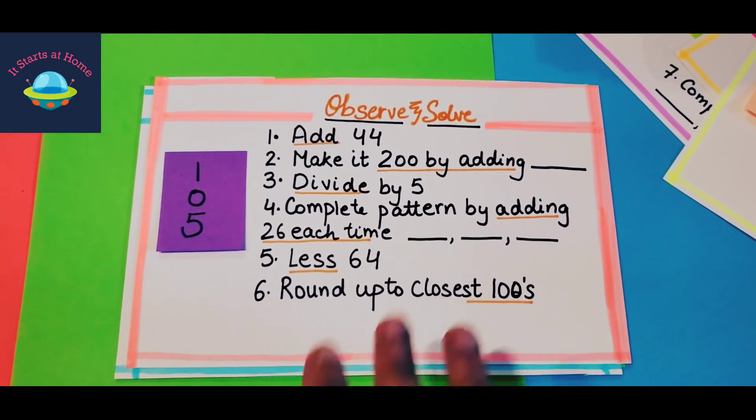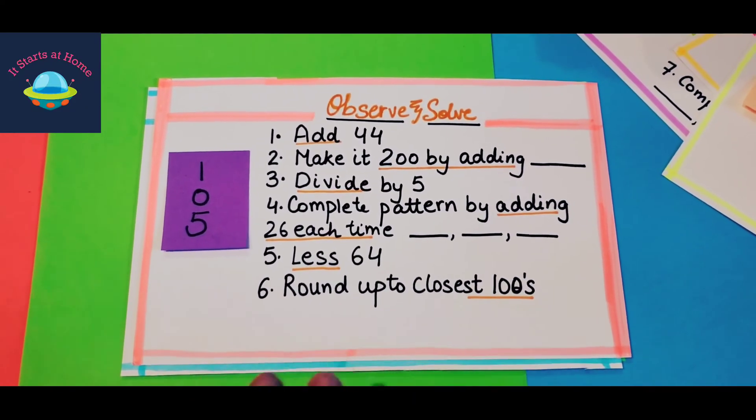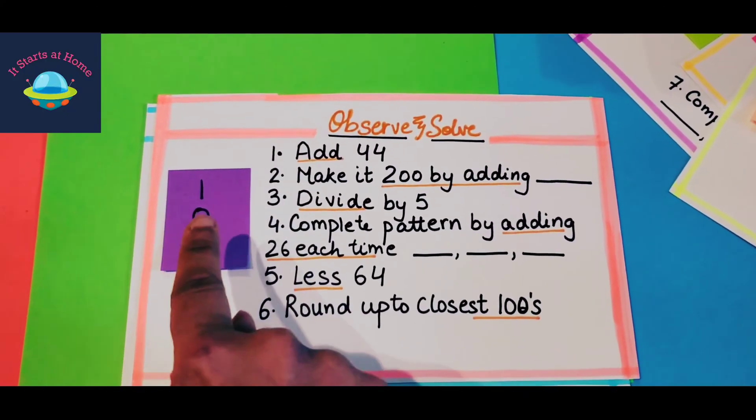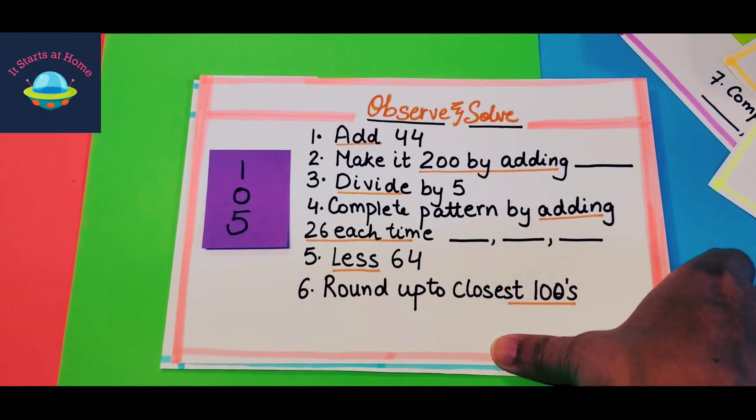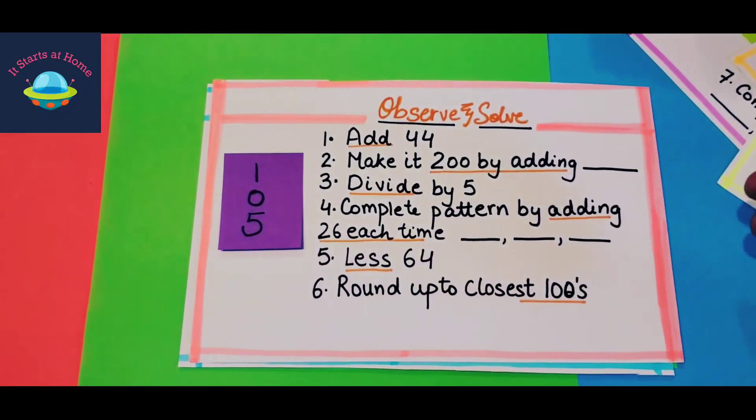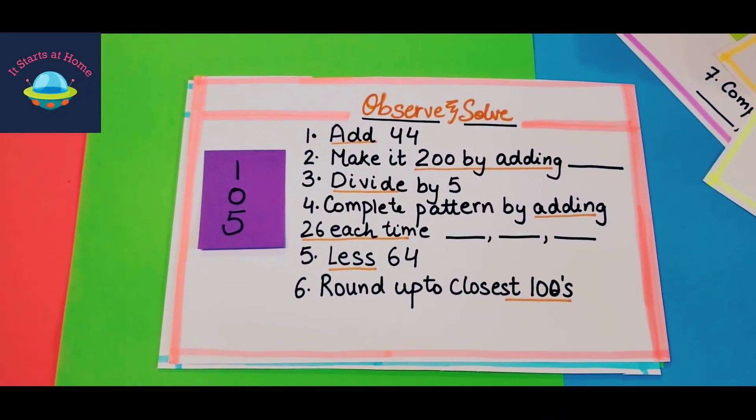It could be more, it could be less, but when you have to do round up to closest, you have to observe this number and then do it. If your child has already been doing all these things, that's when it will be helpful. If not, I would say improvise according to your child's age and what position they are in math.